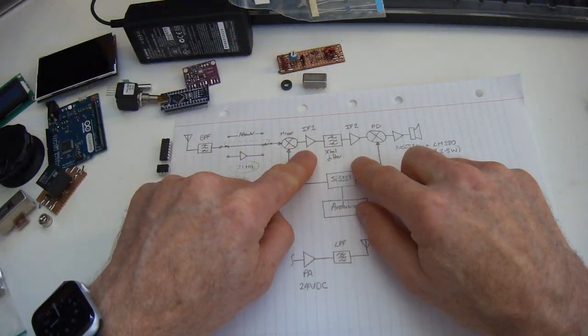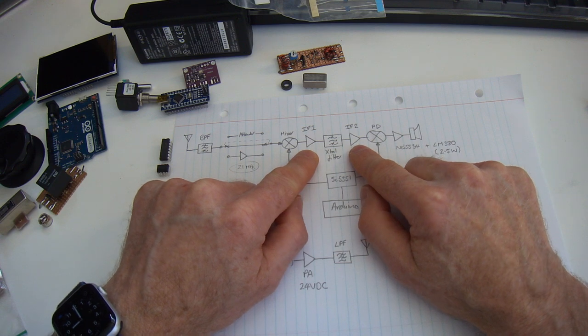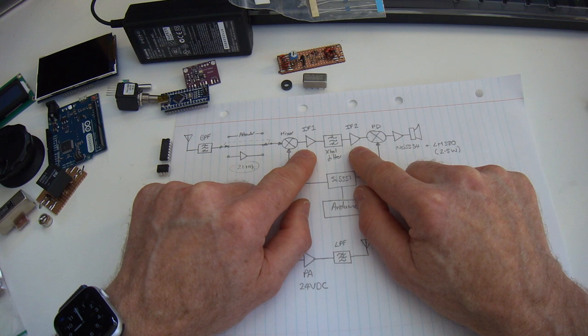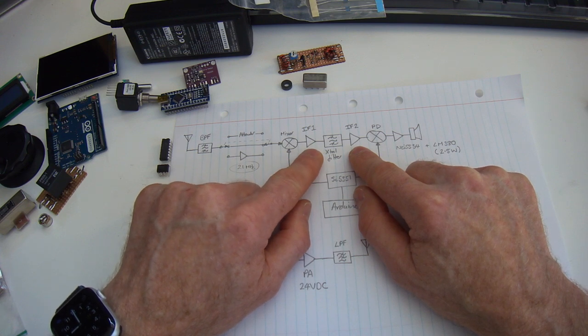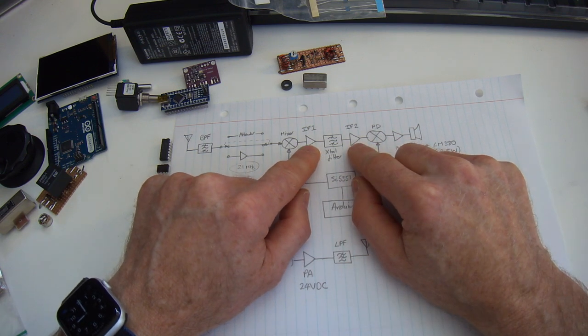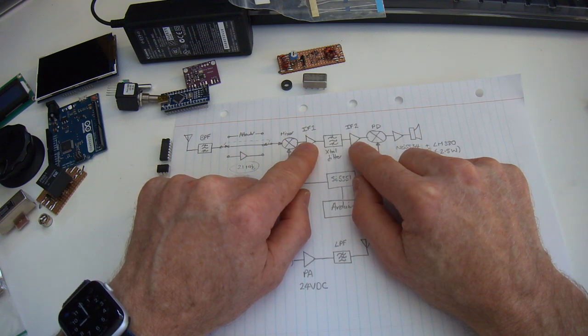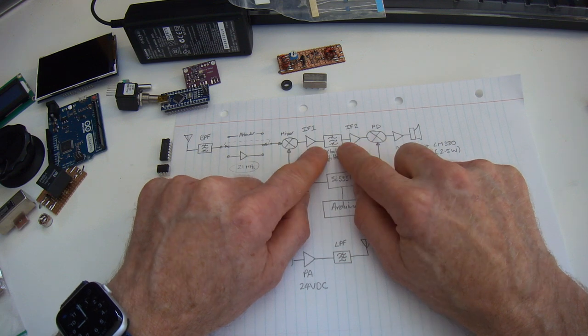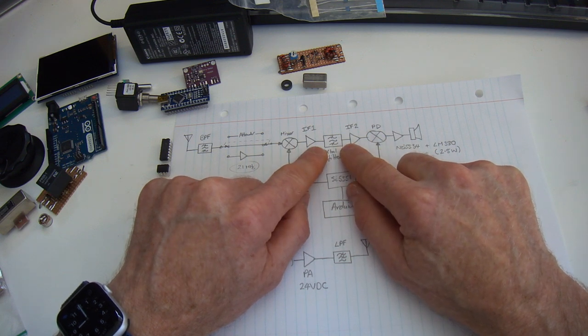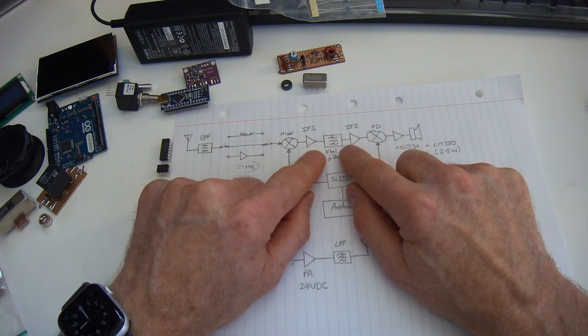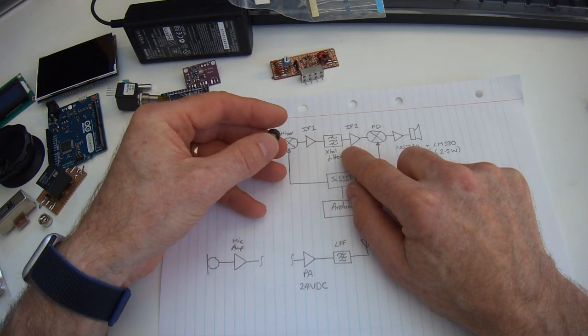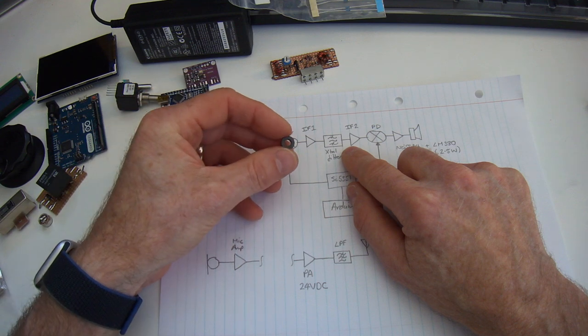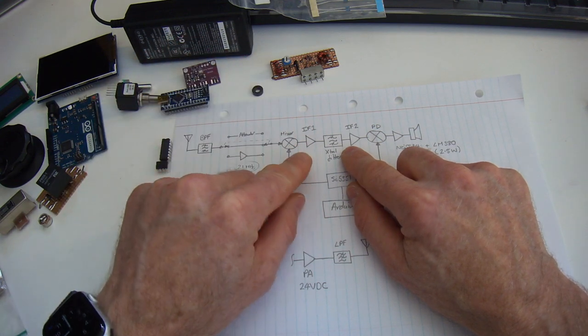In terms of the IF amplifier, again in the spirit of keeping things simple, it'll be standard 2N3904 based amplifiers. I mentioned before L matching. What I may look to use for the I/O of those two IF amps will be an L match for the mixers and for the crystal filter. If I find that's not working very well, then I'll resort back to using a traditional transformer using the FT37-43.